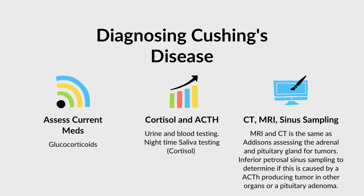For cortisol and ACTH in Cushing's, you do similar testing to Addison's. You want to do a 24-hour urine or a blood test for cortisol levels as well as ACTH — remembering that is your adrenocorticotropic hormone. Another test you can do is nighttime saliva testing. I emphasize nighttime because cortisol levels adjust in patients throughout the day and night, and those cortisol levels are typically best evaluated for Cushing's syndrome at night. That's why you want nighttime saliva testing to evaluate cortisol levels.